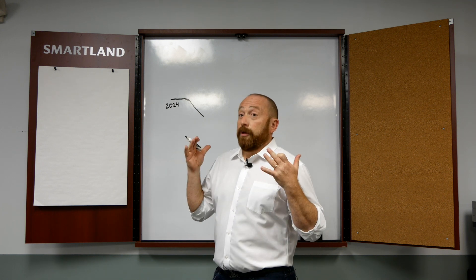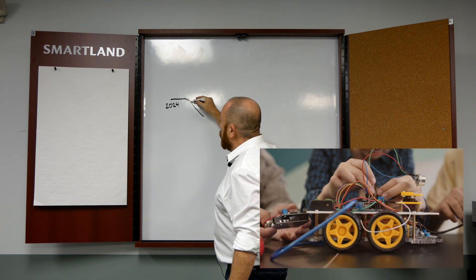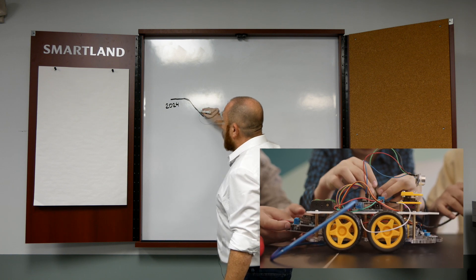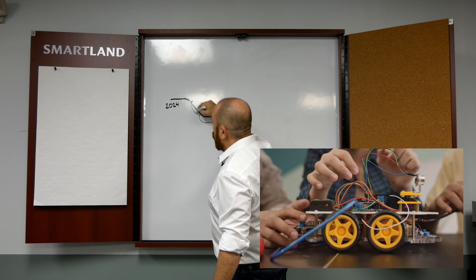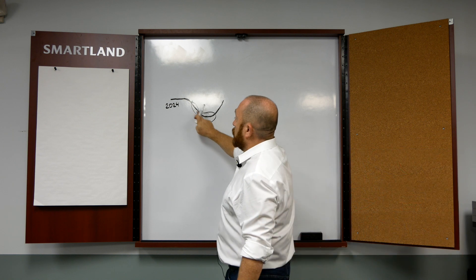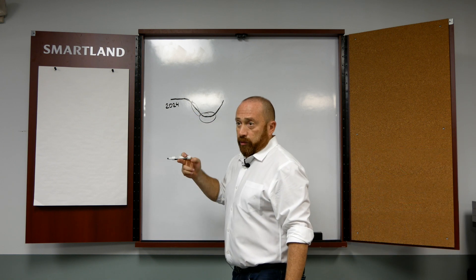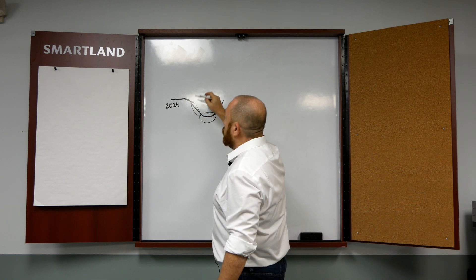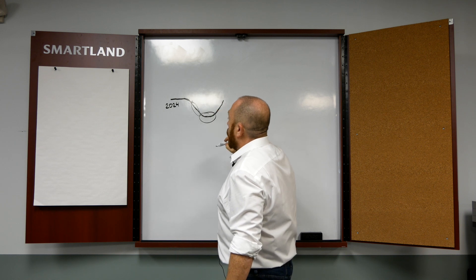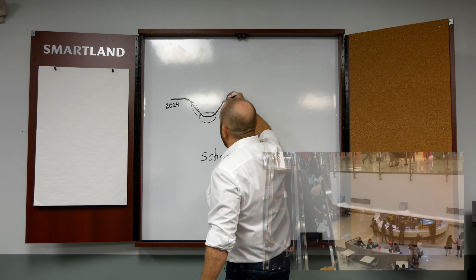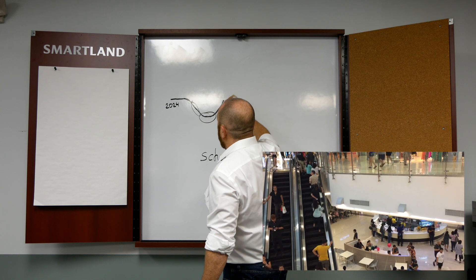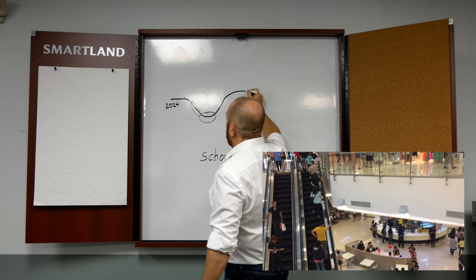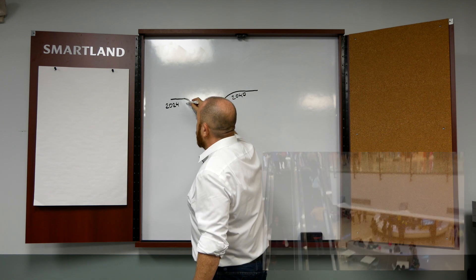People will start going back to schools - this is probably one of the best businesses to be in, schools of some sort, technical colleges where you can learn robotics and programming. More and more people start getting new jobs and multifamily is back online.